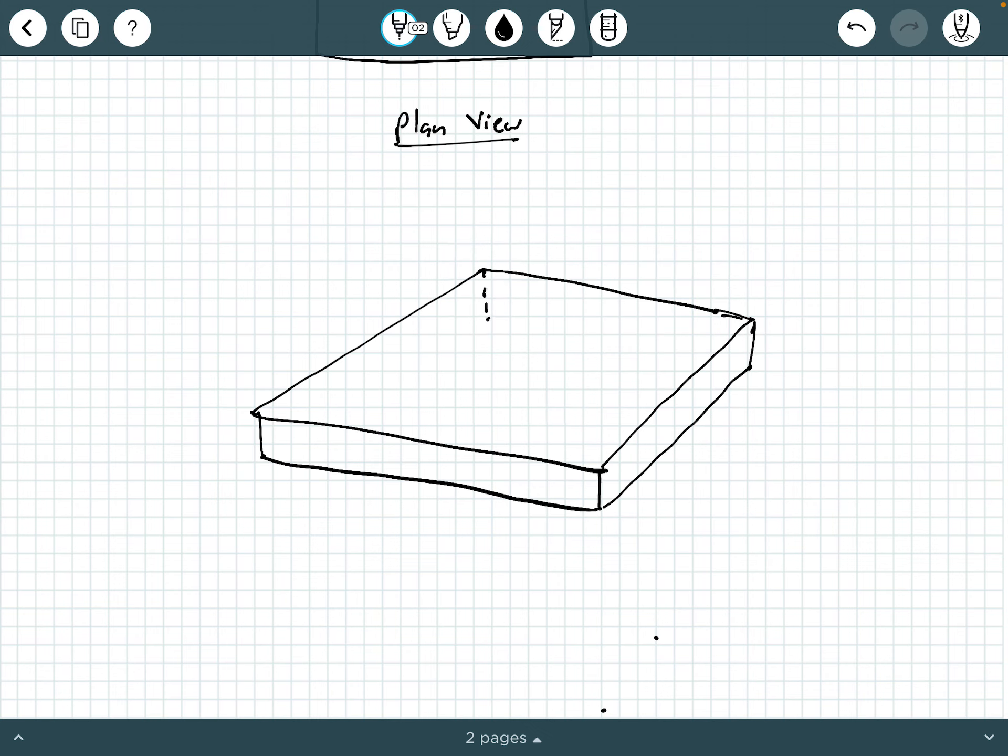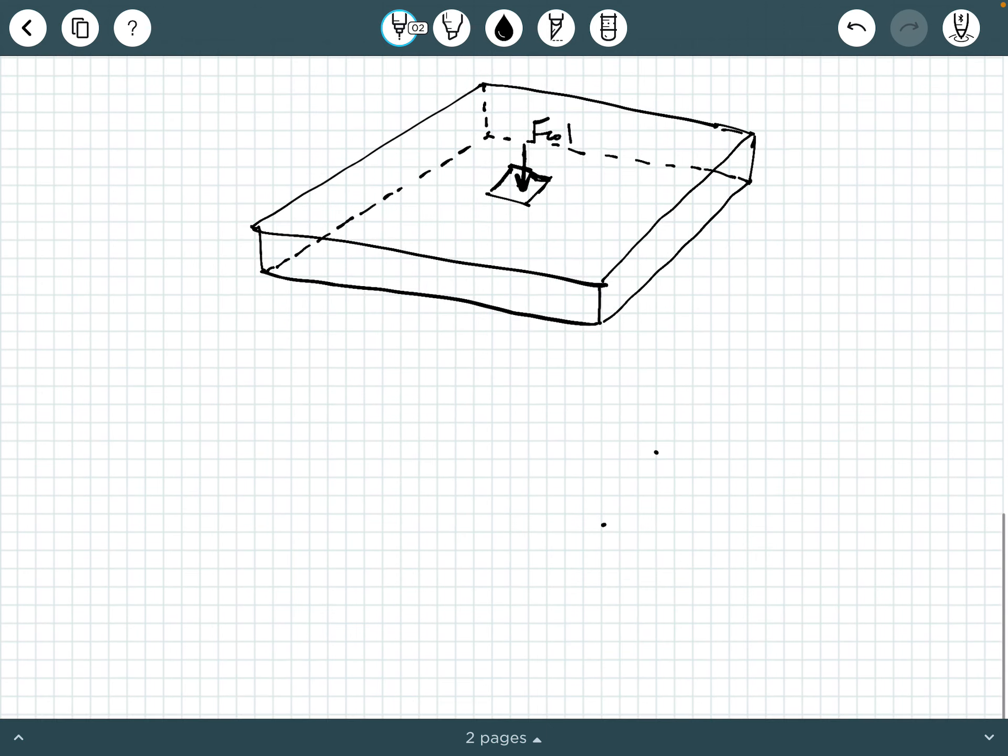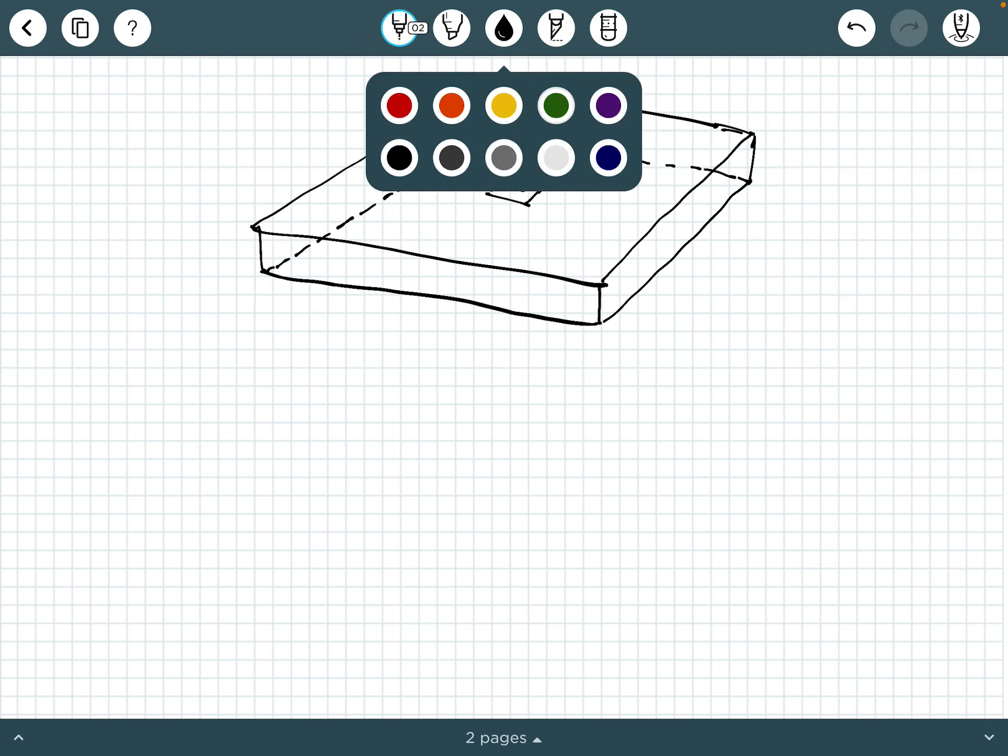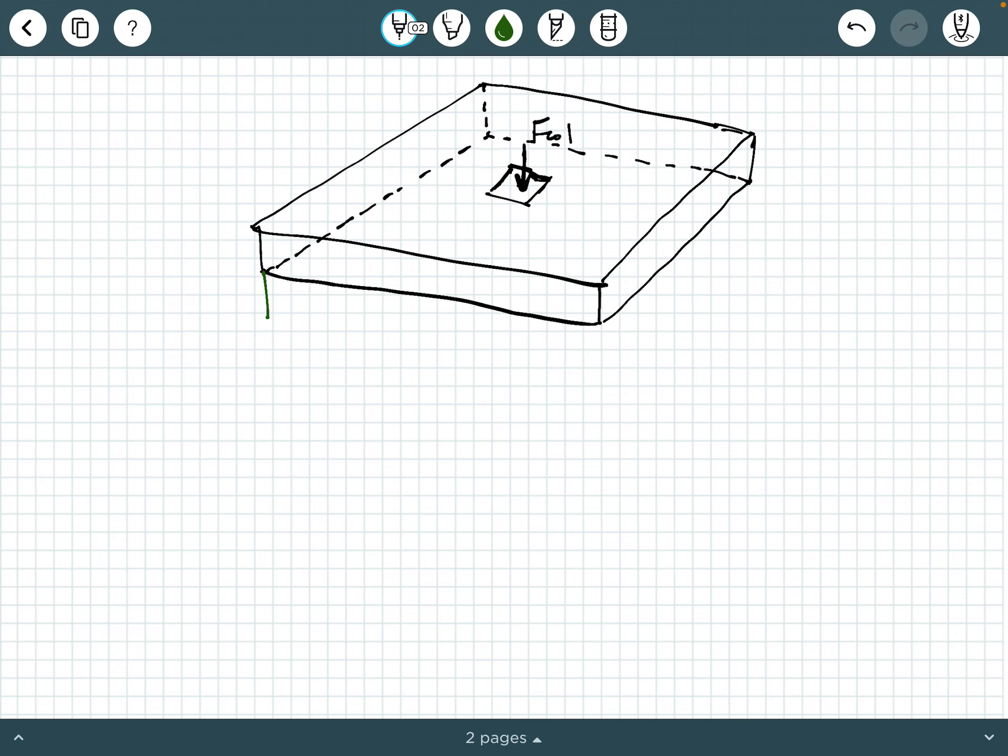And we're going to draw some hidden lines here. Just like that. And then our column interface will be somewhere right here with the F column coming down right in the middle. So where would this bearing pressure be in this kind of three-dimensional view?